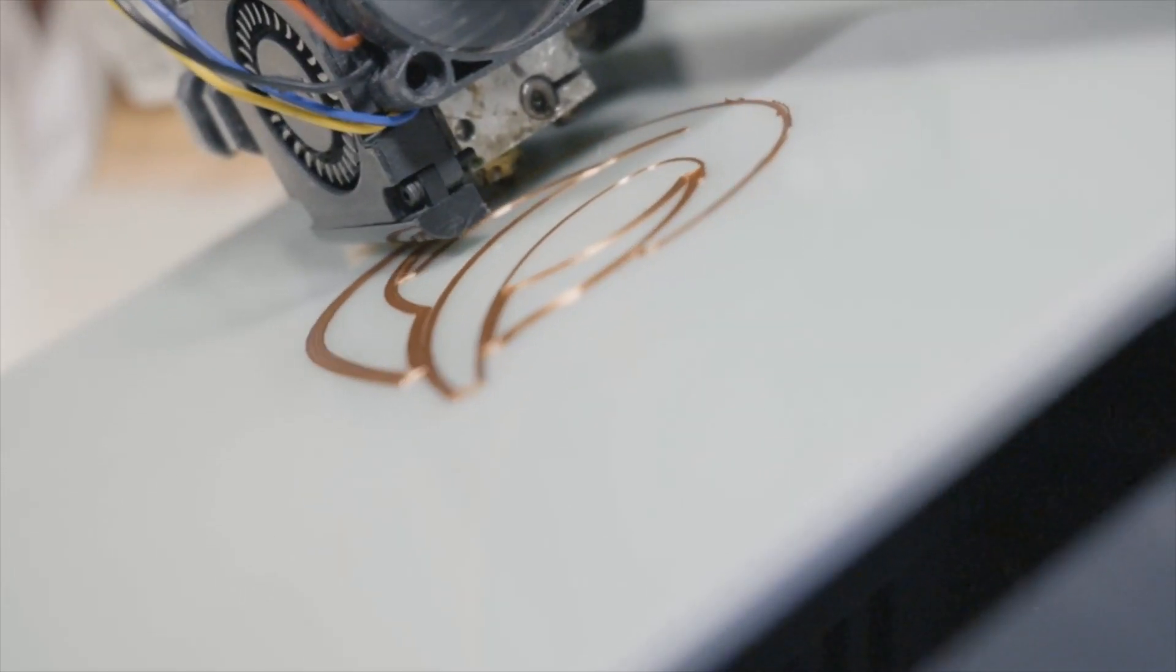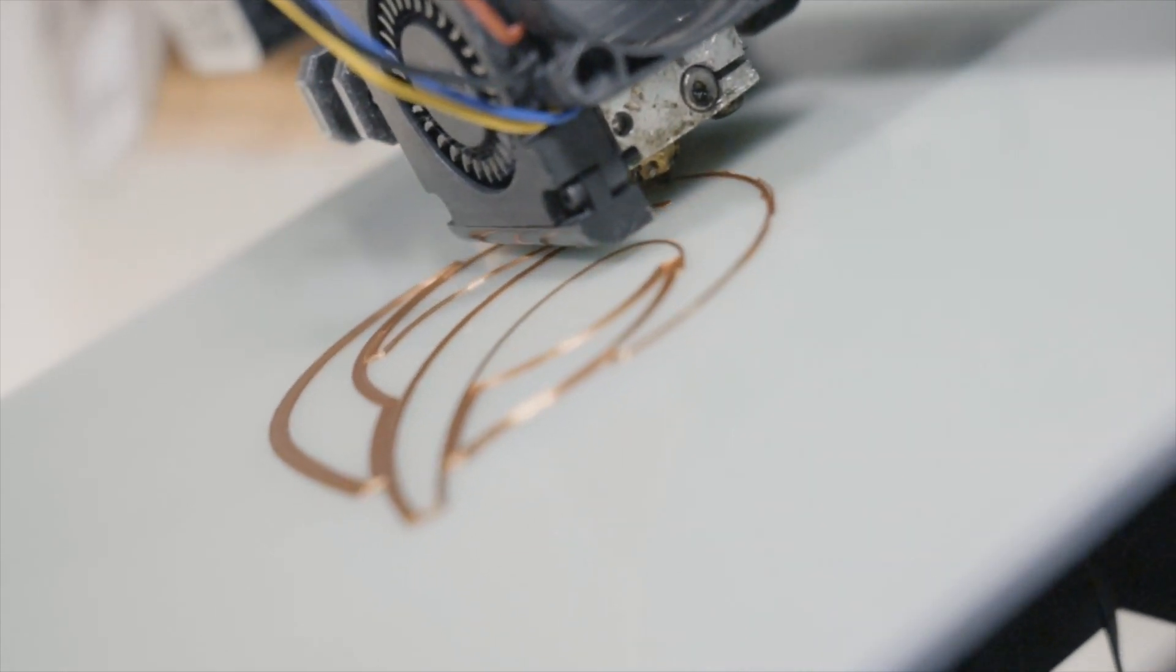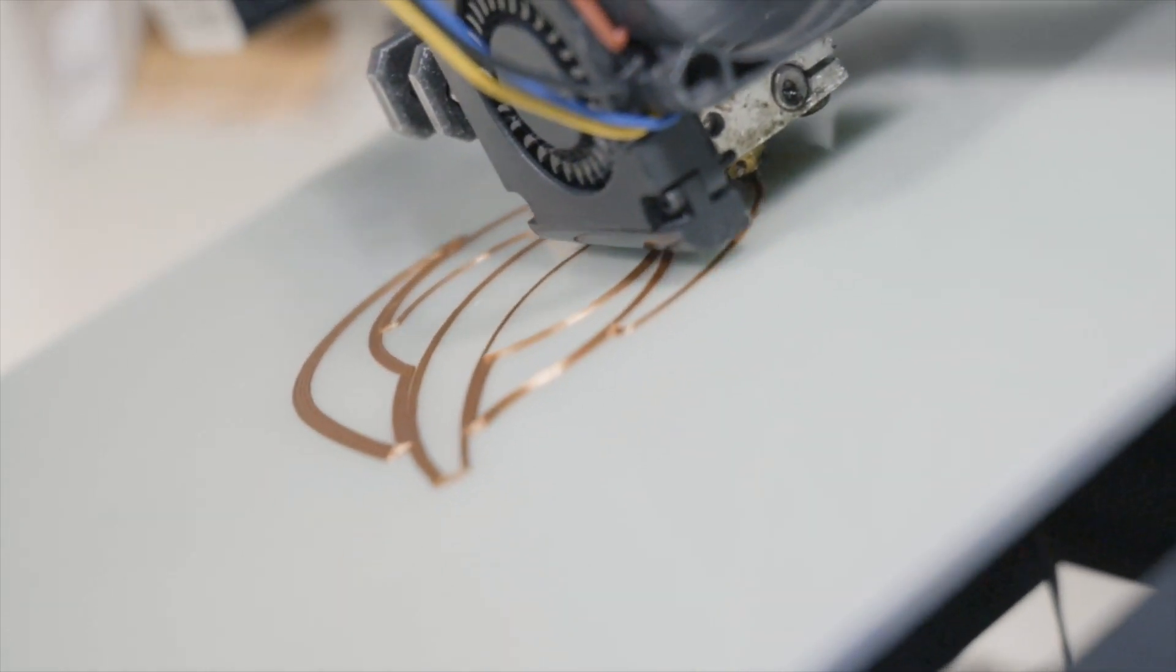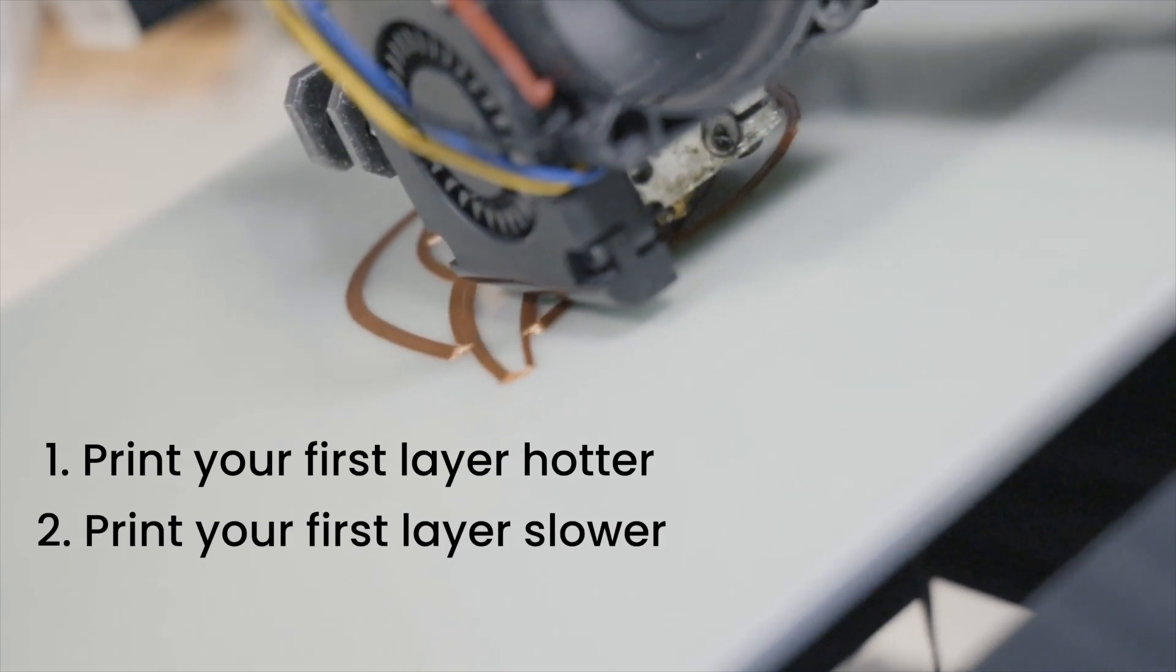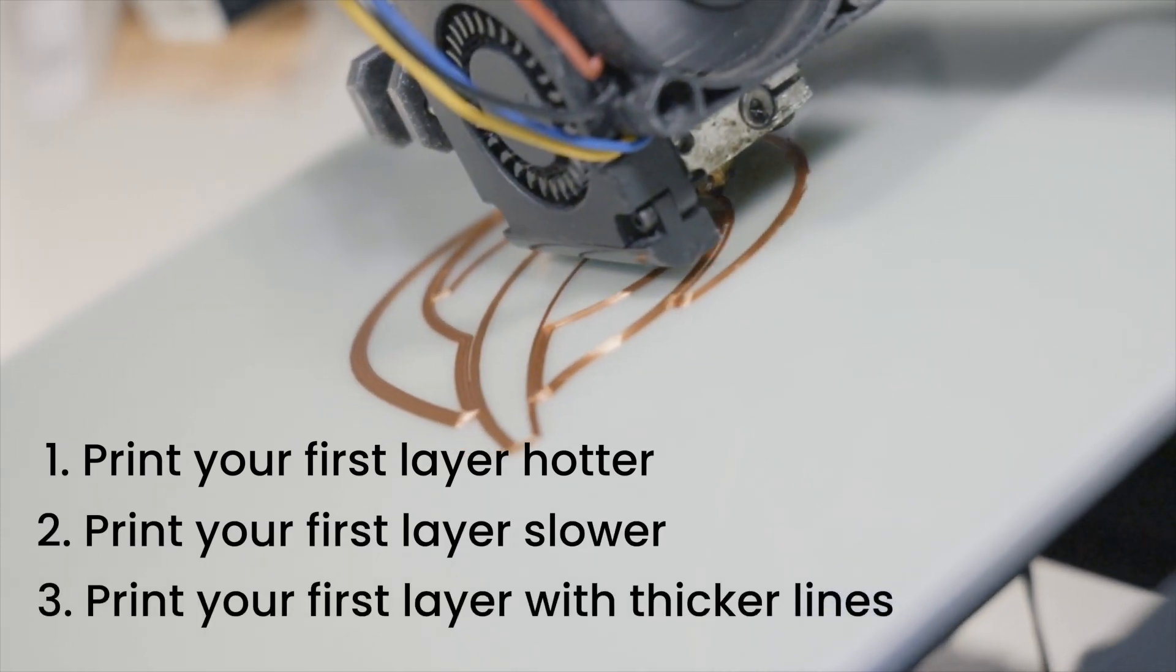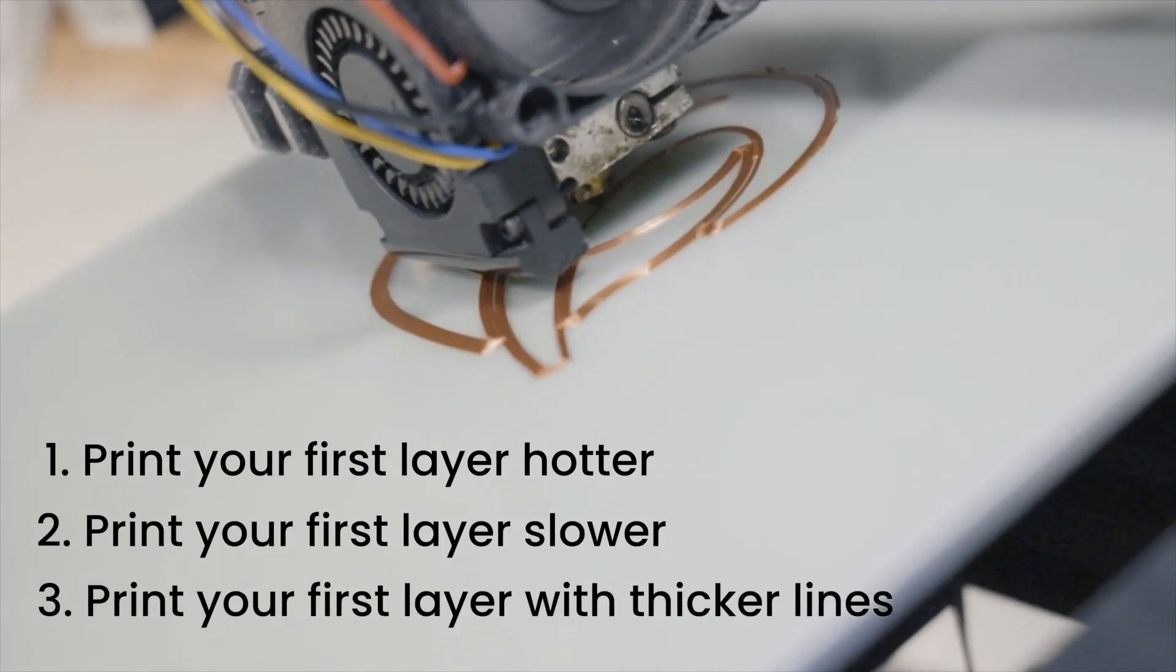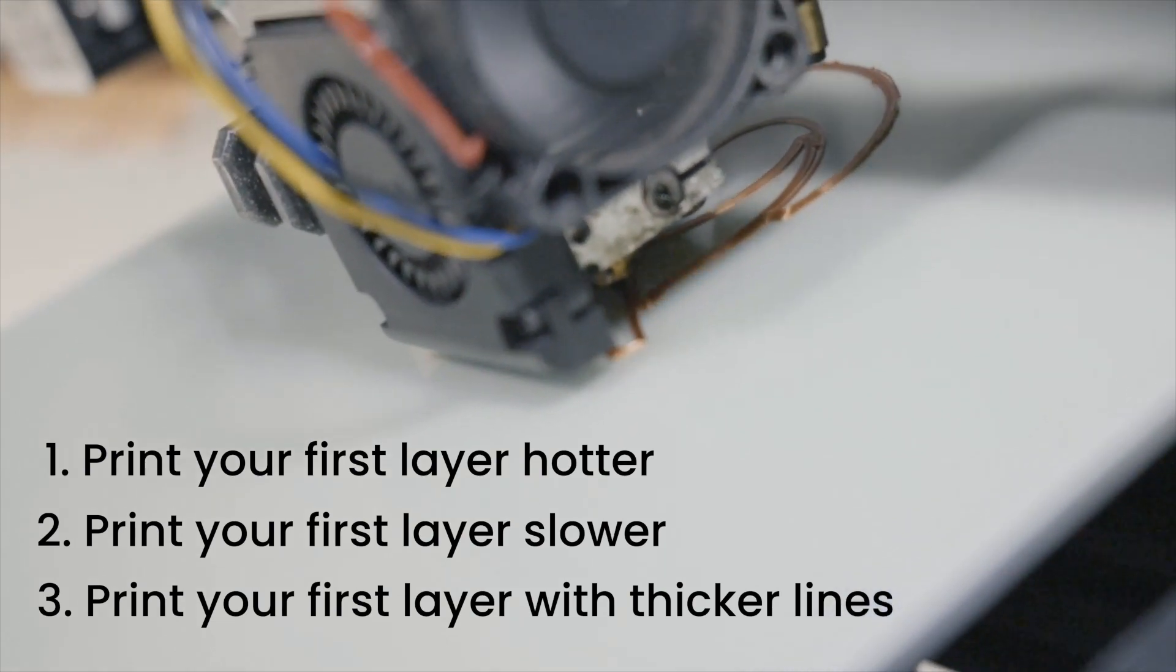What can you do to prevent nozzle blobs from happening in the first place? The best thing you can do is to make sure that your first layer goes down perfectly. To do that, you just need to have really good first layer settings. I recommend printing a first layer really hot, printing it really slow, and printing it with a really thick line width and layer height, so that the plastic takes quite a while to cool down. That helps it stick very well to the build plate.